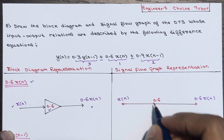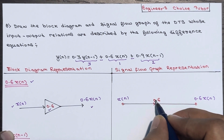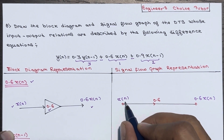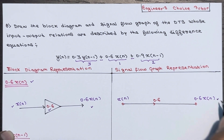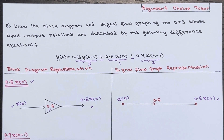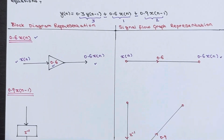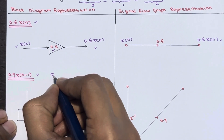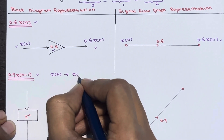The equivalent signal flow graph representation for 0.6·x(n): x(n) is the input at a node, mark an arrow, and write 0.6 at the top. The x(n) will be multiplied by the constant 0.6 and you will get 0.6·x(n). Now for the second part, which is 0.9·x(n-1).